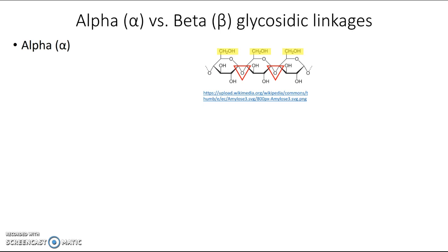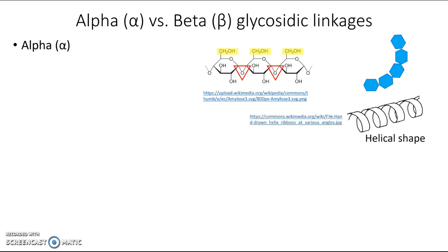When many glucose molecules are joined using alpha glycosidic linkages, something interesting happens. You can see there's a bit of an angle between the first two glucose molecules, and when we add another glucose the angle is magnified — it starts to bend because the bond angle is additive. Every time there's a little bit more angle, and the molecule starts to coil around. So with alpha glycosidic linkages, a chain of glucose coils into a spiral or helical shape. Polysaccharides with alpha glycosidic linkages end up with a helical shape.